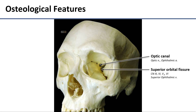The superior orbital fissure is this long, irregular-shaped opening on the posterior wall. Its size is kind of a testament to the number of structures that pass through it. Here we have cranial nerves three, four, the ophthalmic division of five, and number six passing into the orbit, along with the superior ophthalmic vein.